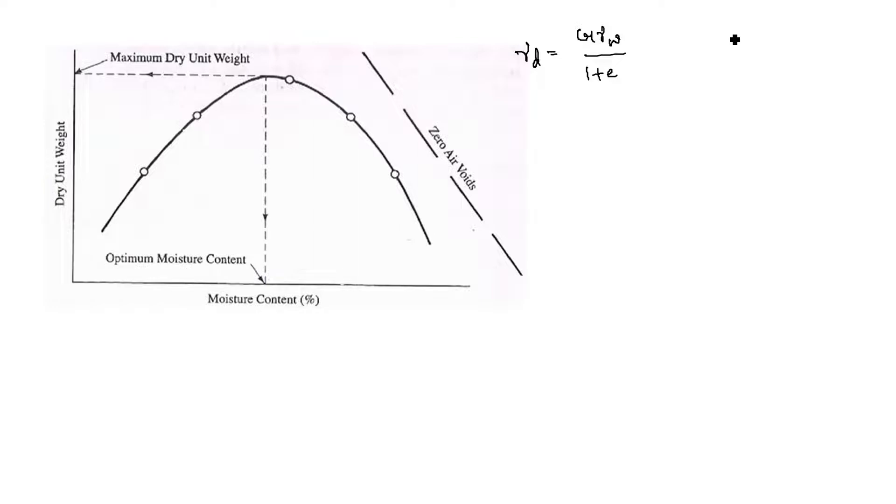Further, E can be written using the relationship between void ratio and water content of the soil. E equals WG divided by S, where S is the degree of saturation.